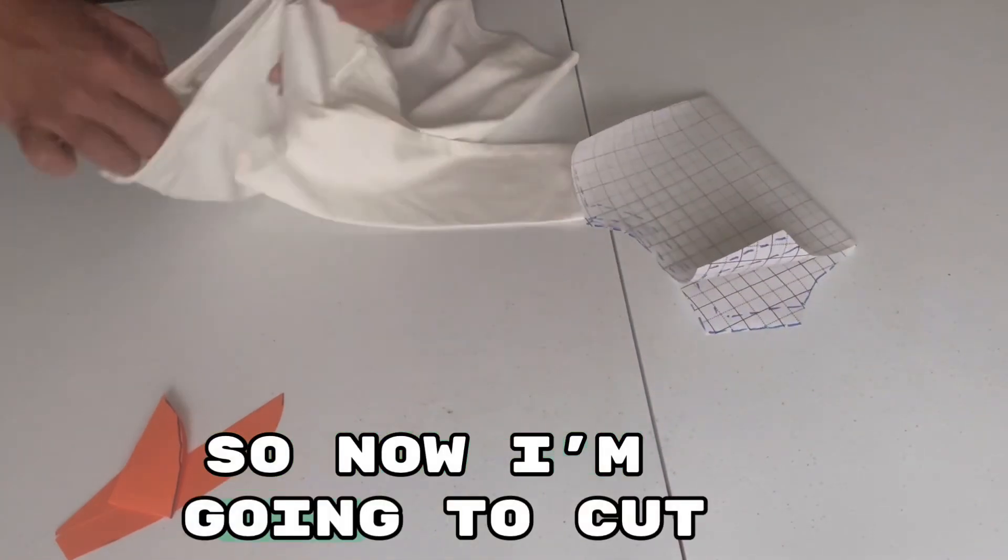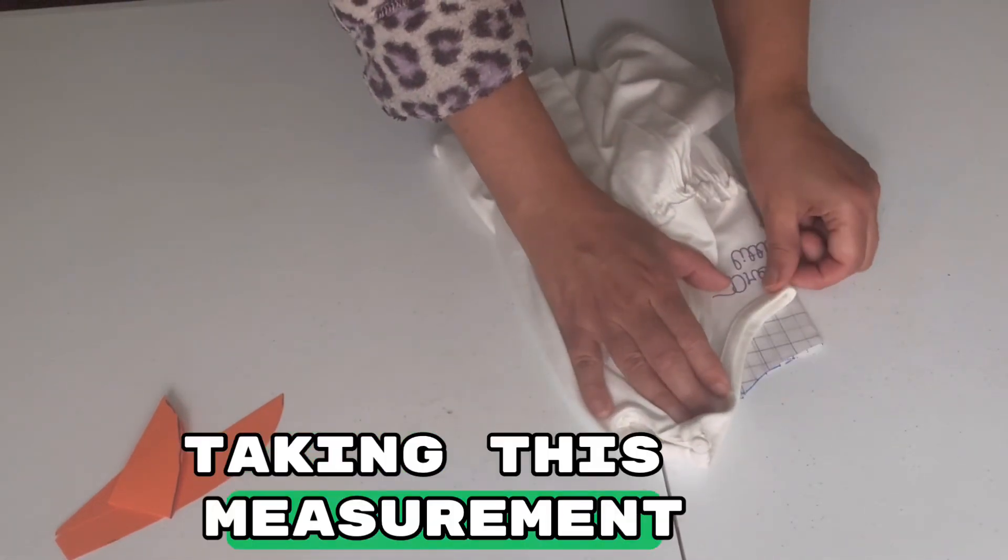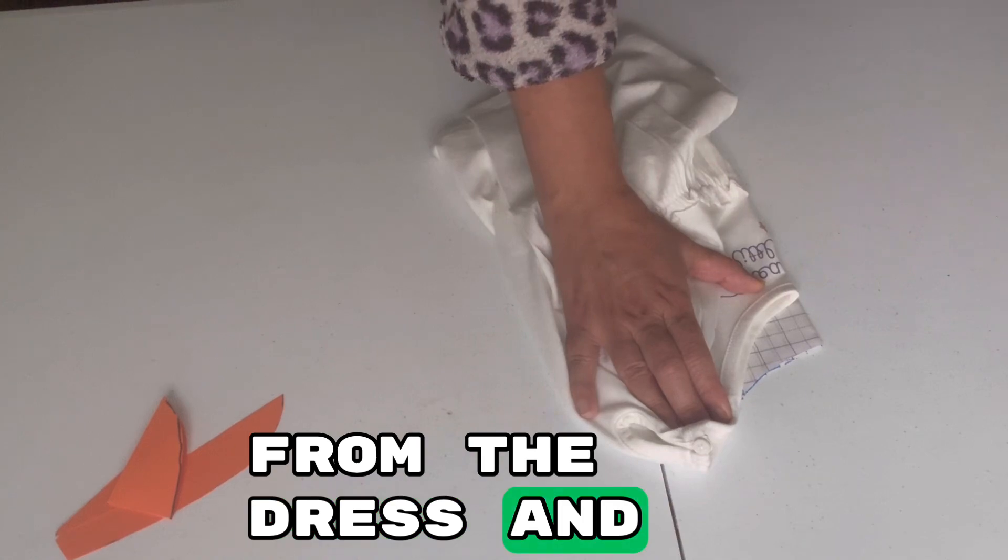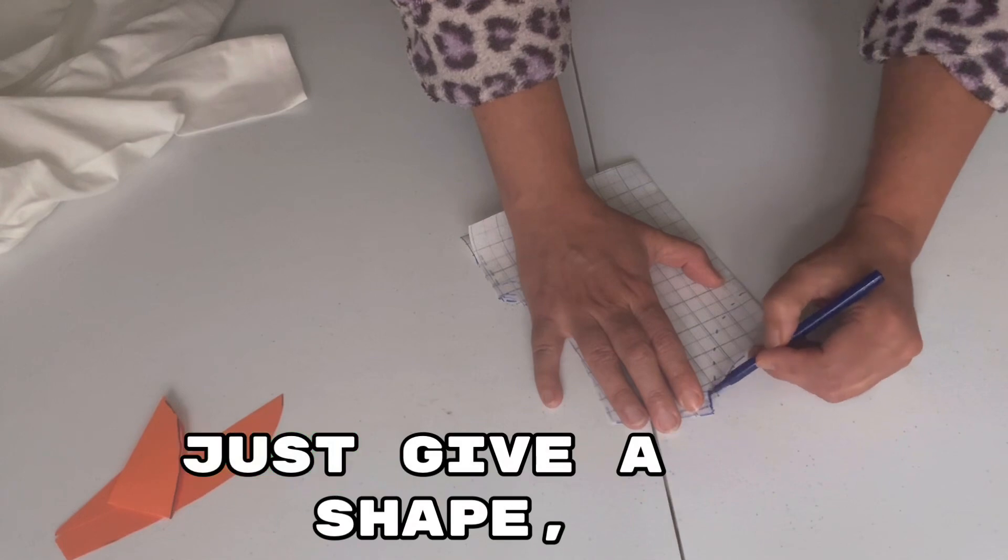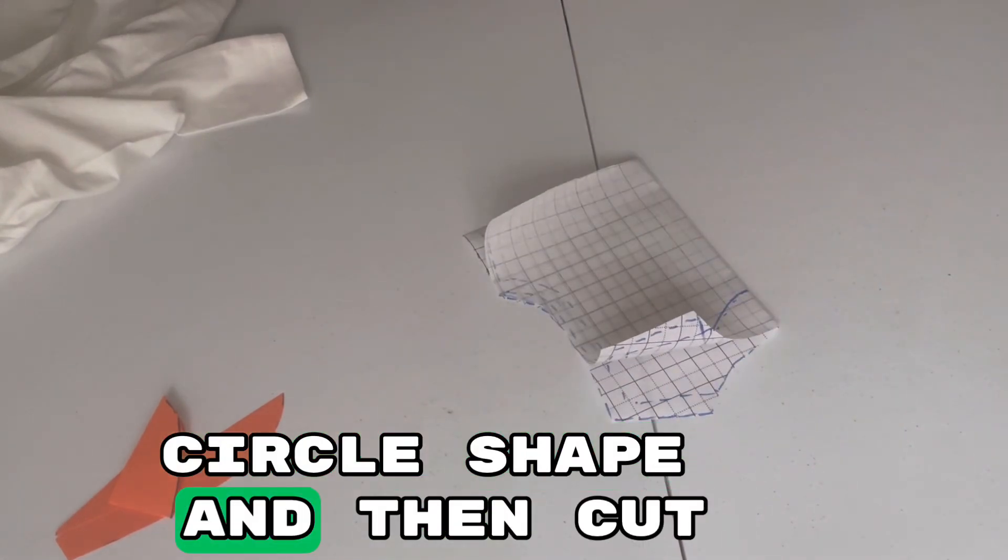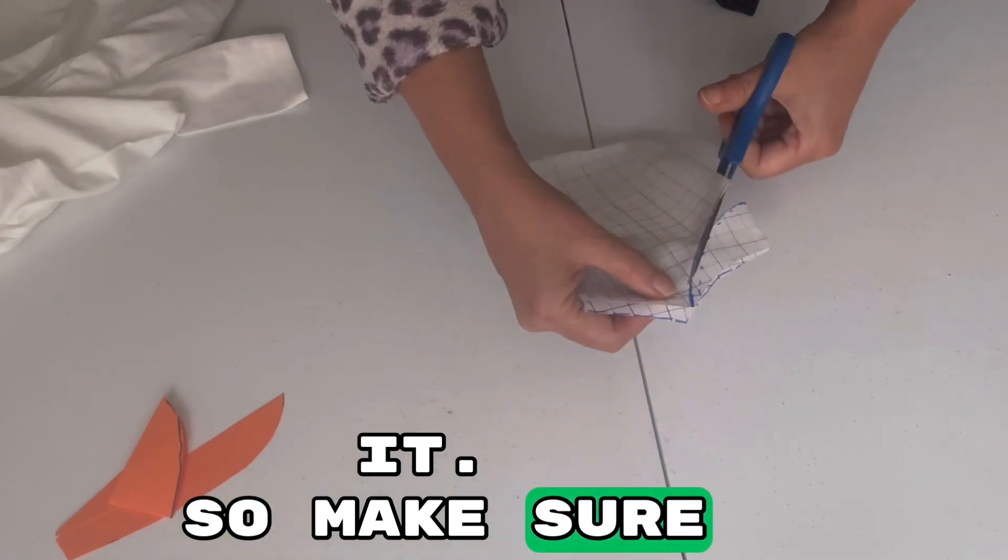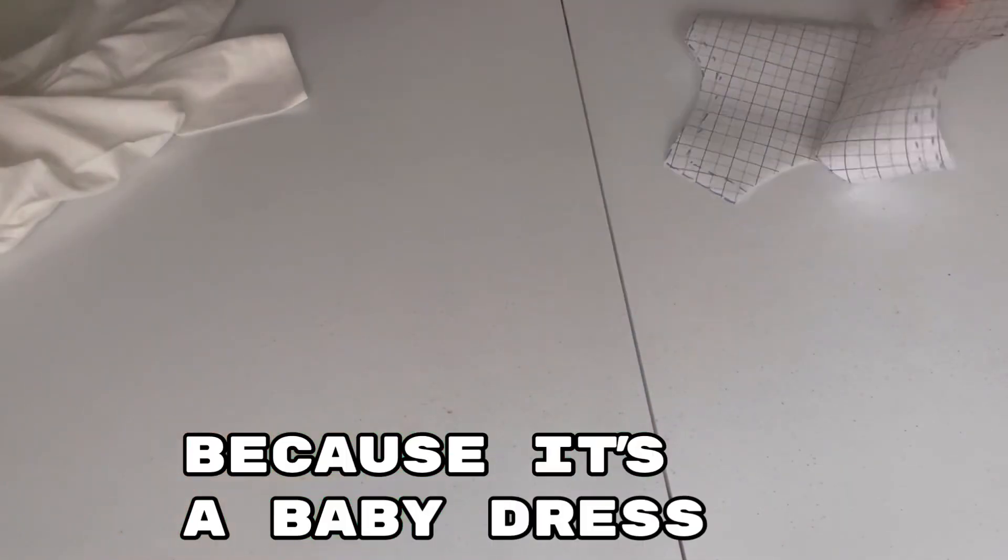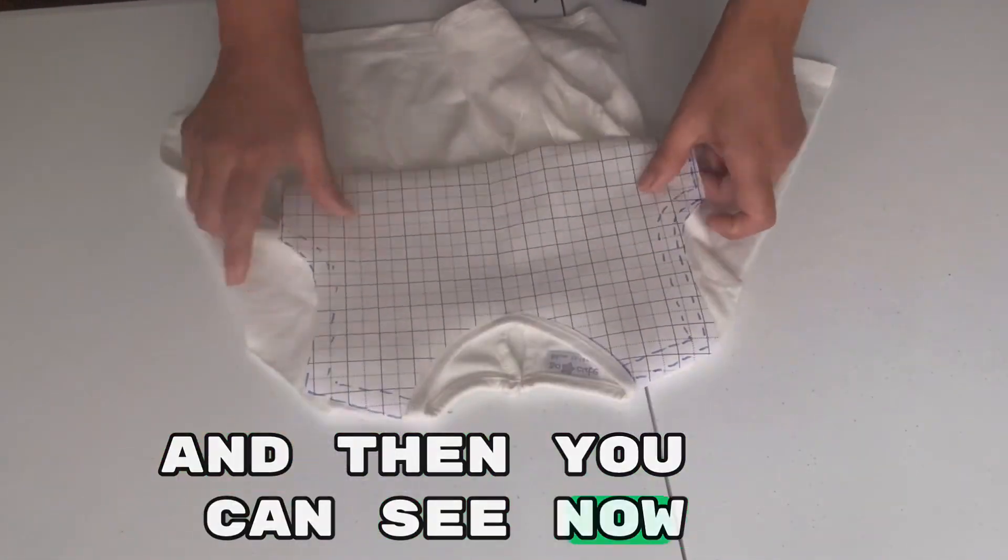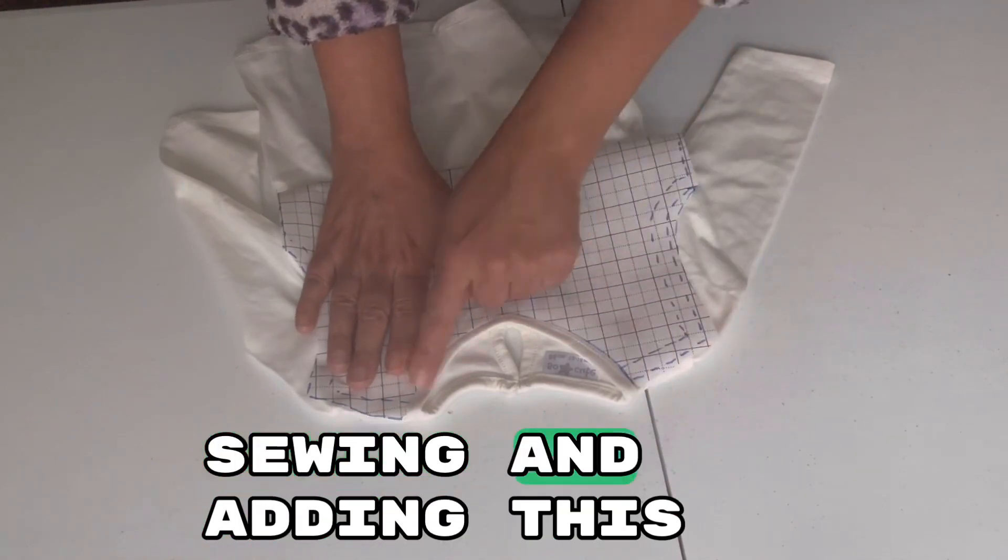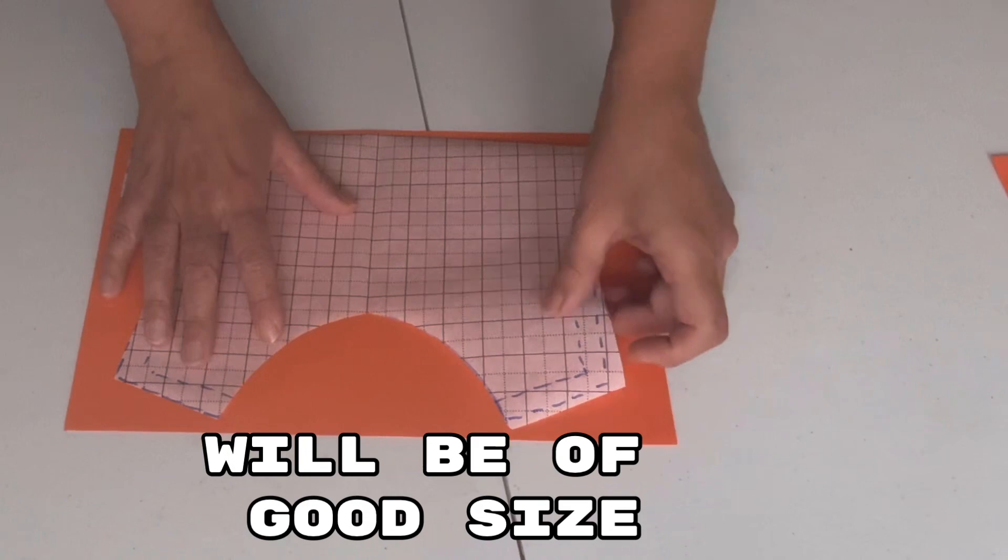Now I'm going to cut the front part. The front neckline is a little deeper, so I'm taking this measurement from the dress and just marking along the side. Then just give it a circle shape and cut it. Make sure you don't cut a deep neck because this is a baby dress. You can see now this is the exact same size, and after sewing and adding this neckline, this dress will be of good size for this baby.